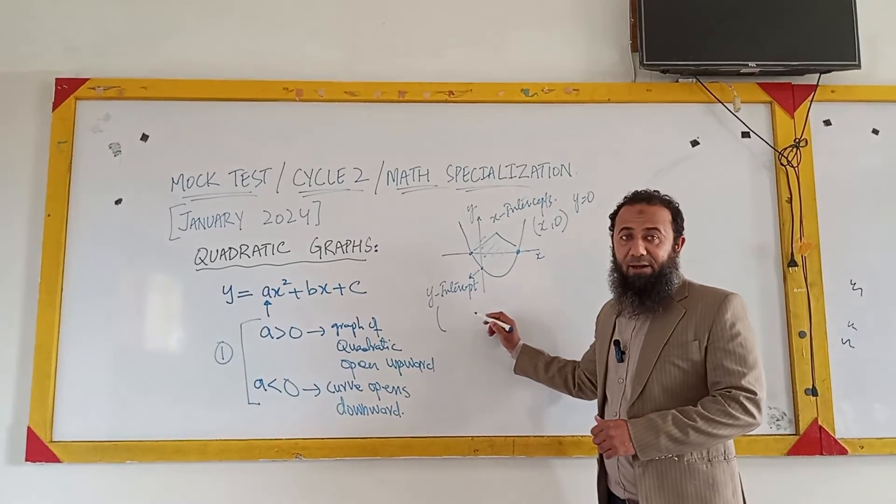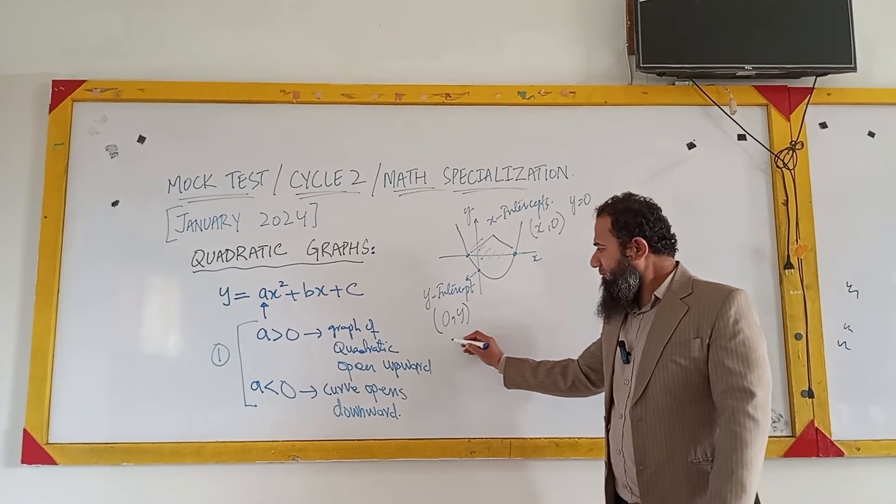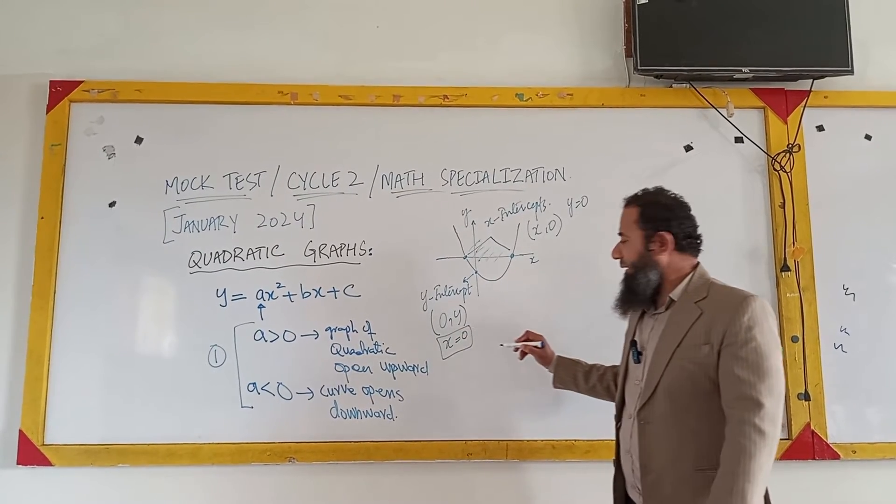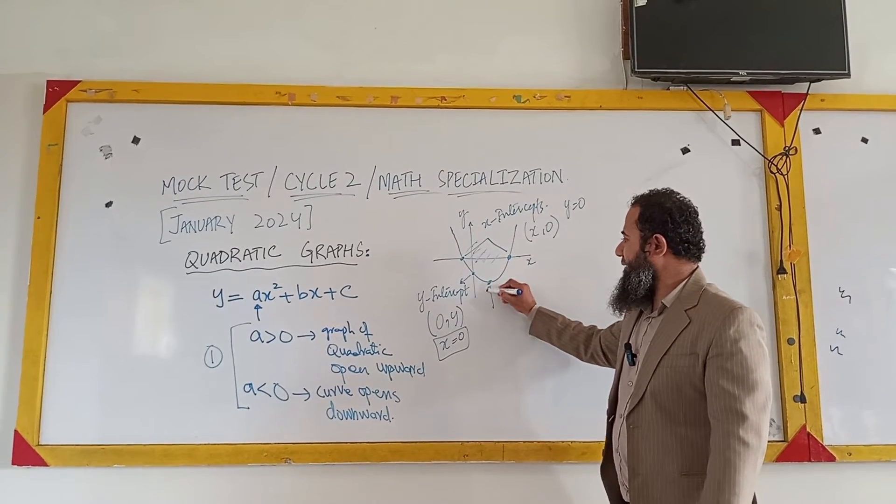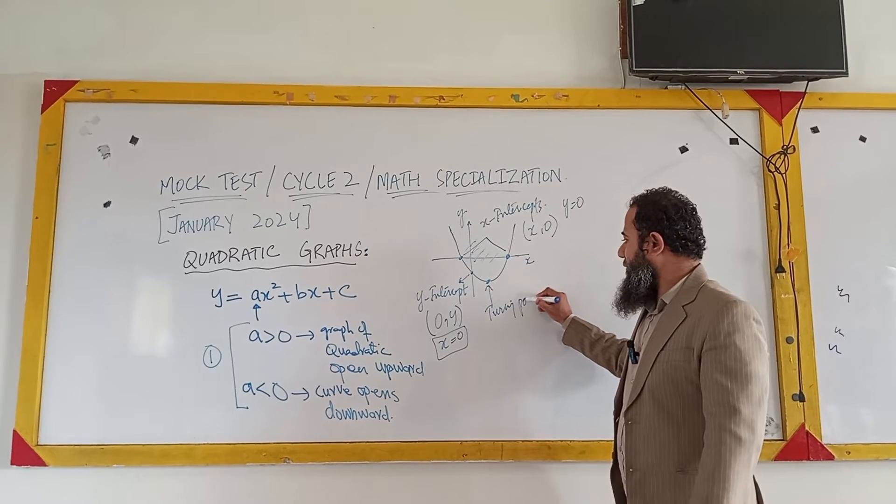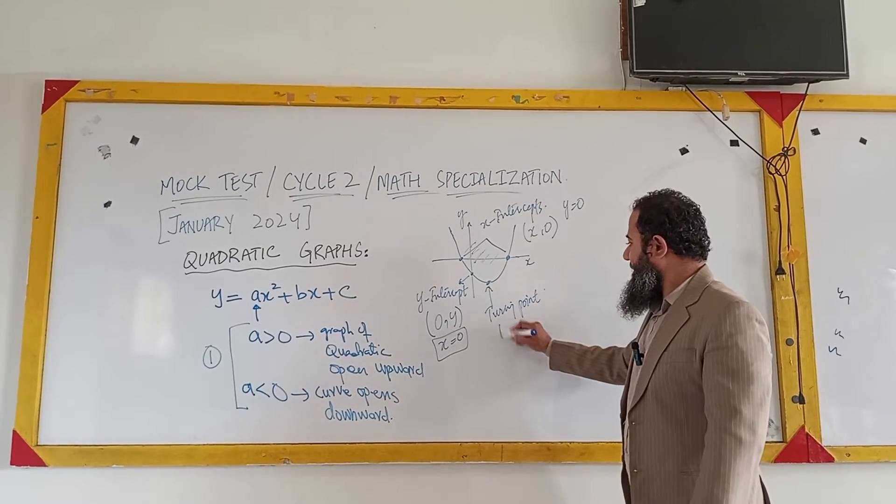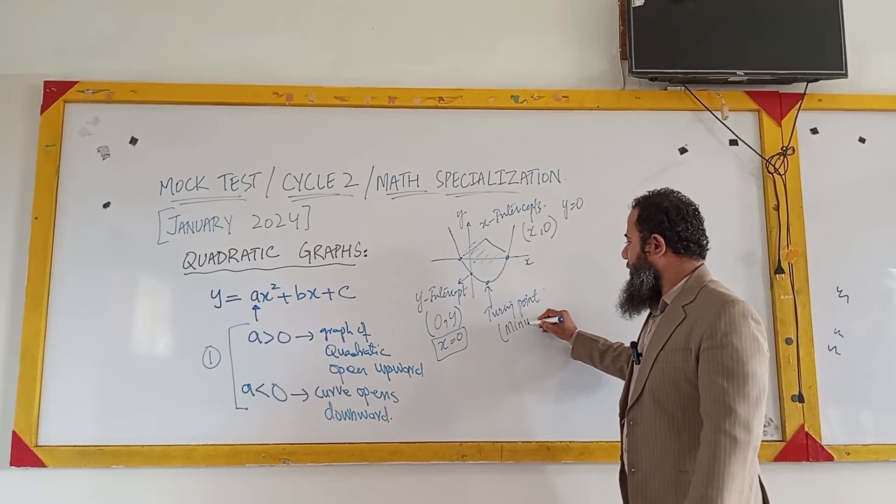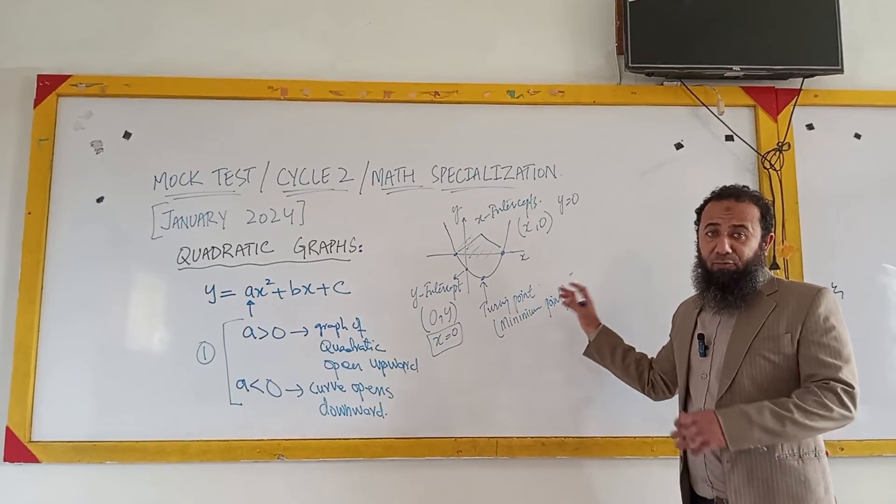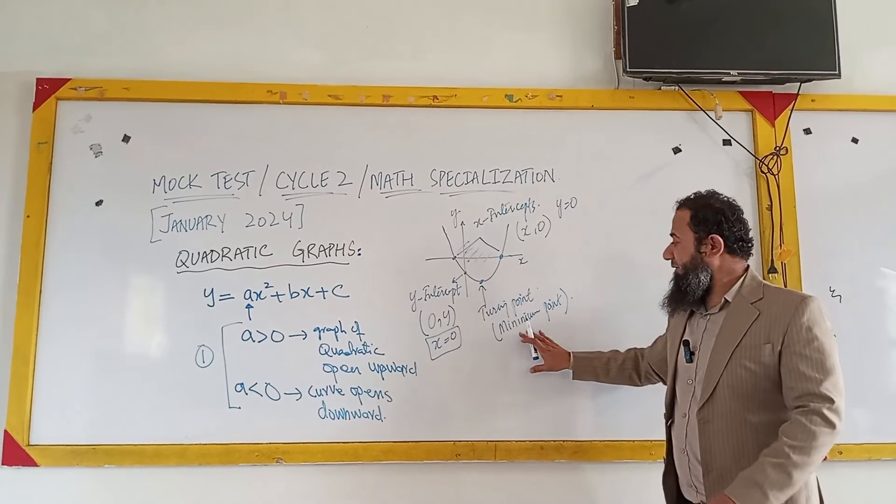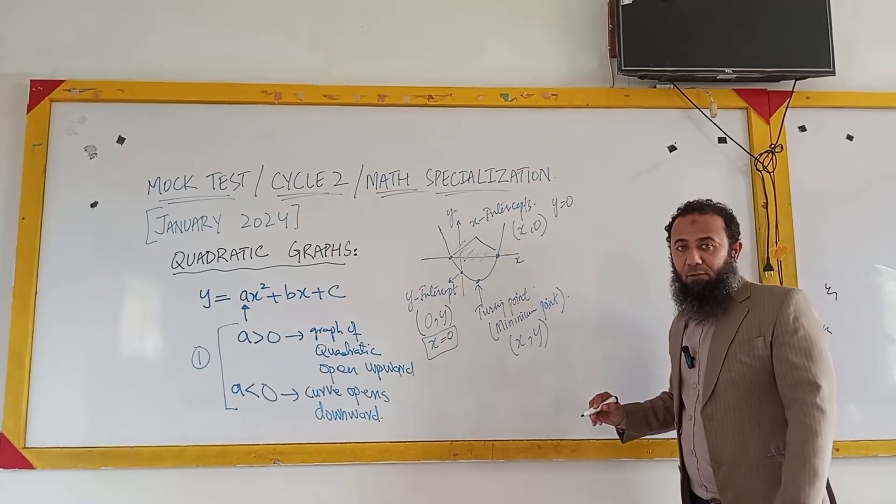The coordinate of the y-intercept is always equal to zero comma y, because x is always zero on the y-axis. And then we have somewhere a turning point. This is called the turning point of the curve, and this is called the minimum point of the curve as well, because when the parabola opens upward it always gives you the minimum point. So the coordinate of the minimum point must be equal to x comma y.